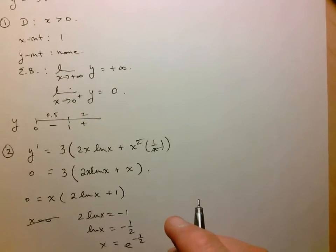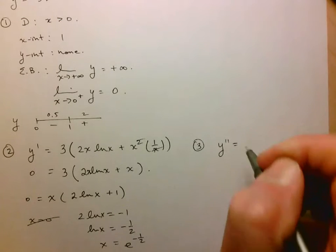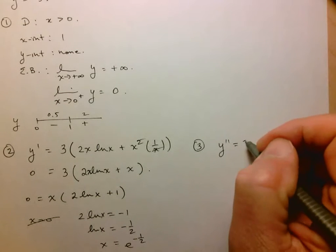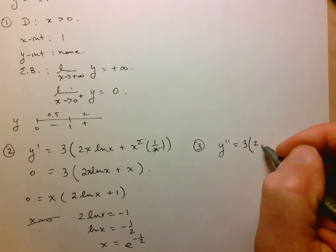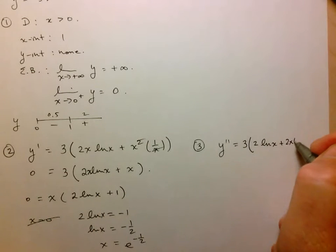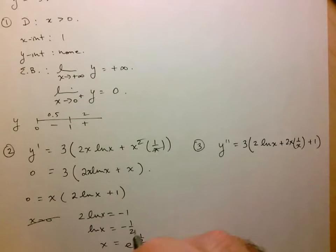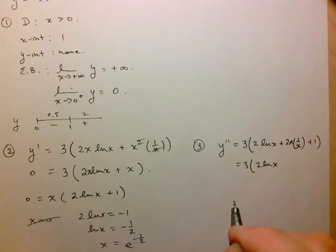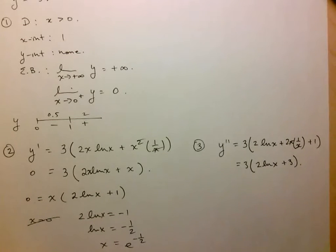Now let's work on the second derivative — step 3. Taking the derivative of 3(2x lnx + x): the derivative of 2x lnx by the product rule is 2 lnx + 2x × (1/x), plus the derivative of x which is 1. So y'' = 3(2 lnx + 2 + 1) = 3(2 lnx + 3).